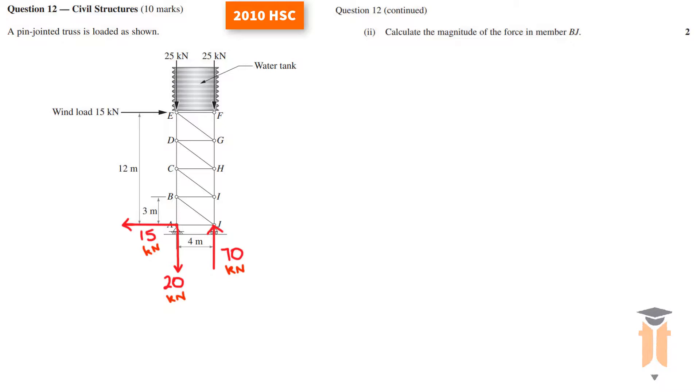To do this we need to employ the method of sections. We need to make a cut through the member BJ. Once you've made a cut through those members, those members now become forces. Now I need to decide which part of that cut to take. Do I take the section above the cut or the section below the cut? In this case I'm going to take the section below the cut for convenience purposes. You can do the top section and you still get the same answers.